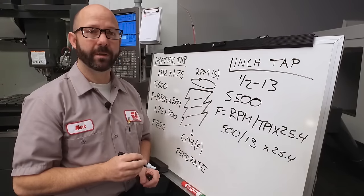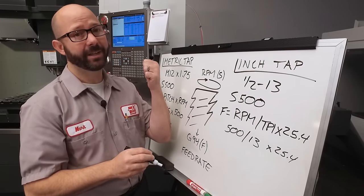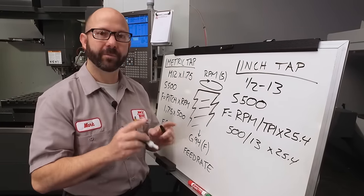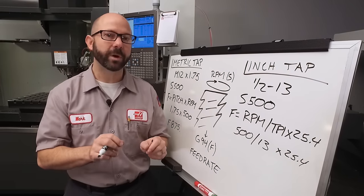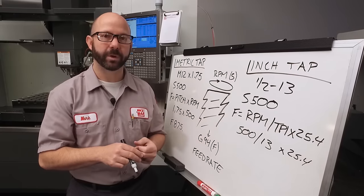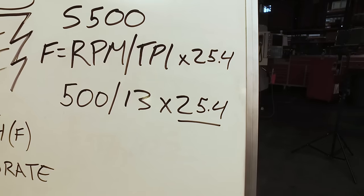Now where did the 25.4 come from? Our TPI is in inches, but my machine is in millimeters. The 25.4 converts those inches into millimeters. There are exactly 25.4 millimeters per inch. So by multiplying by 25.4, we've converted our formula into something the machine can use.